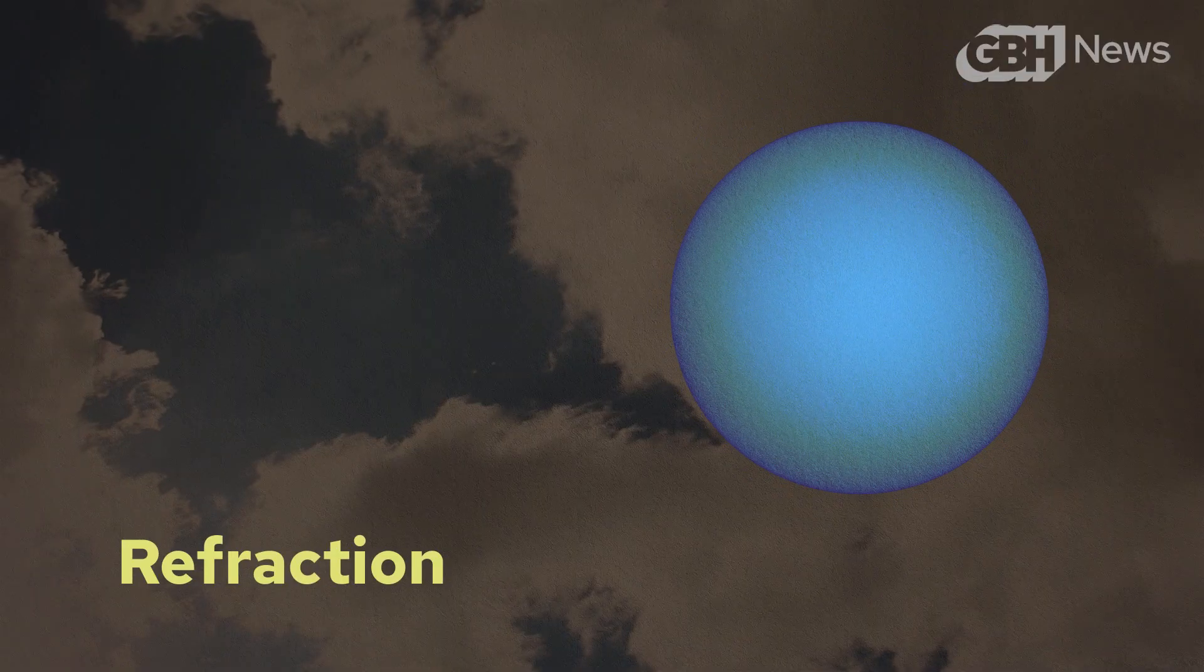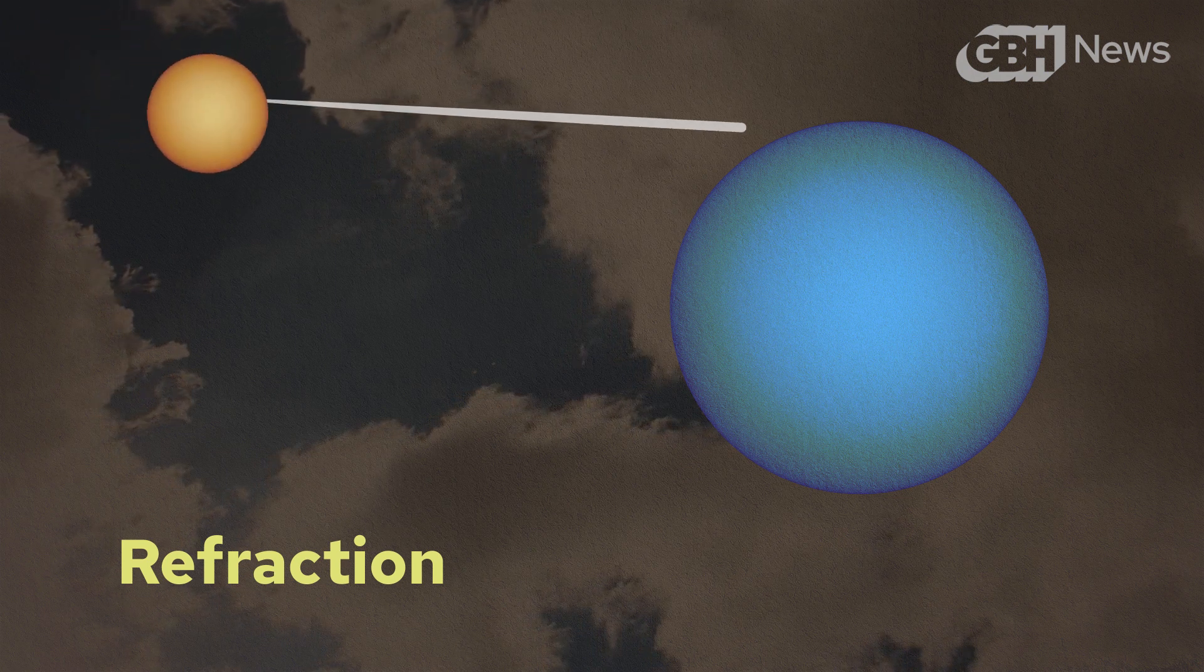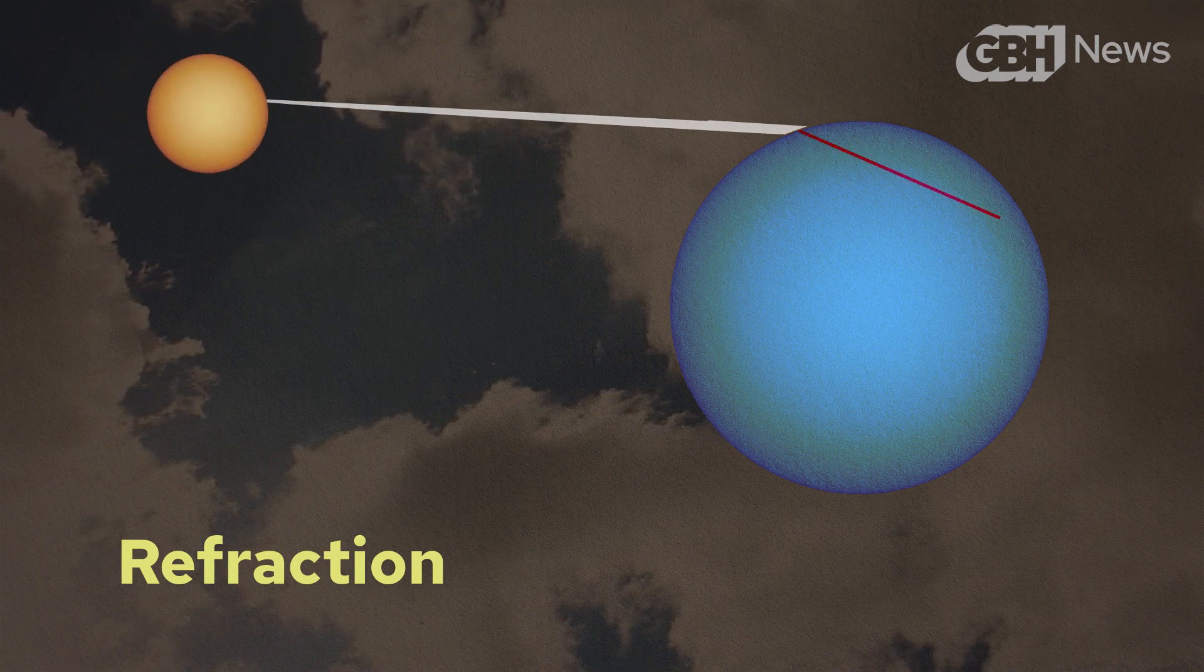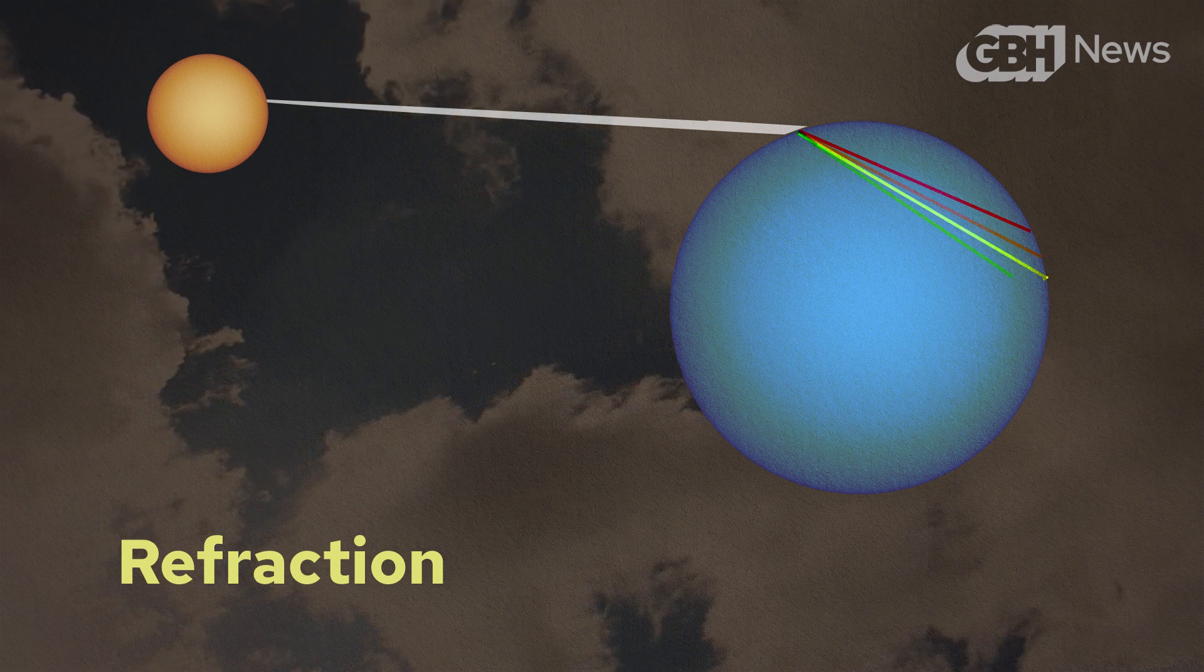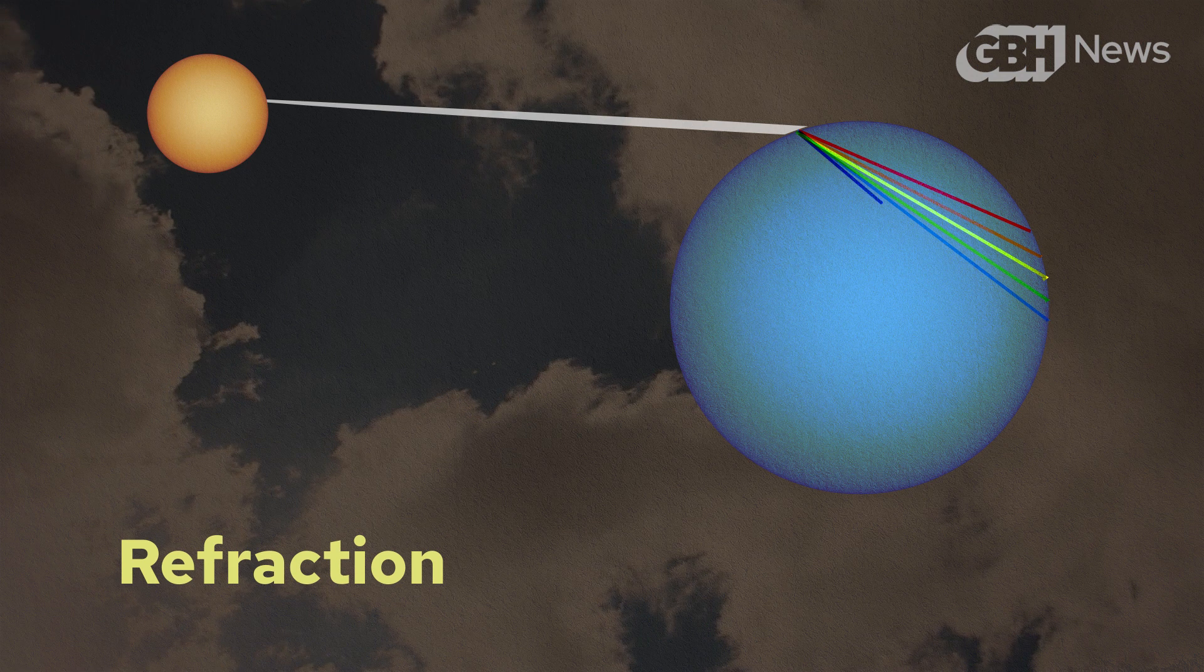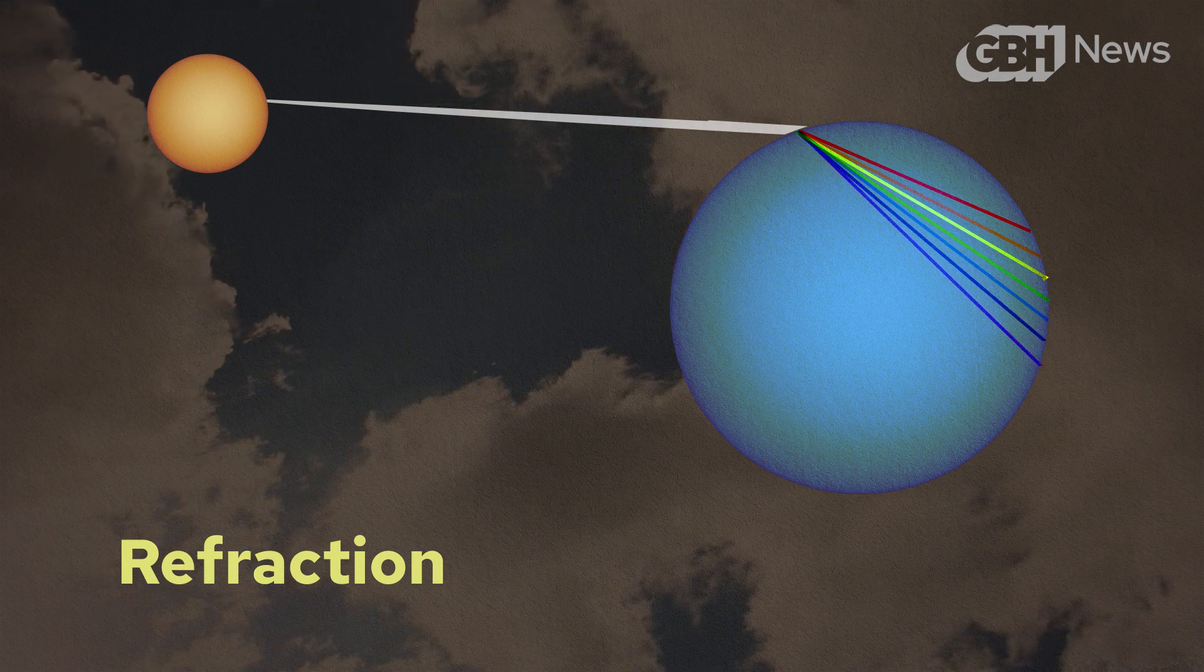Refraction and reflection. Refraction is responsible for a rainbow's colors. When sunlight enters a raindrop, it bends. White light, like sunlight, is comprised of a spectrum of colored light. Now each color is at a slightly different wavelength and bends at a slightly different angle when it enters the droplet.